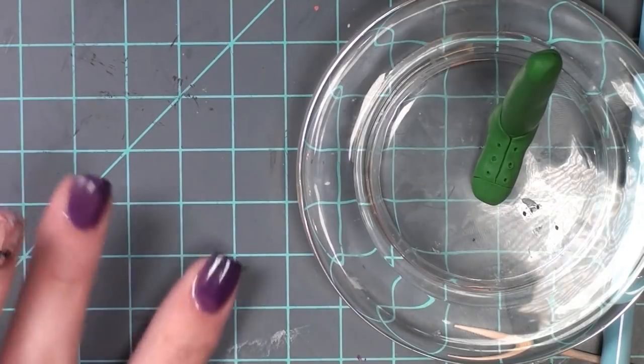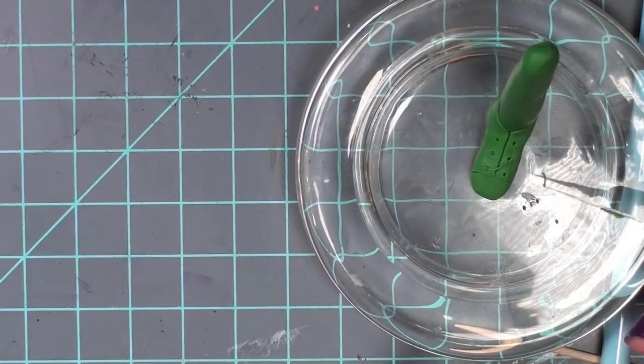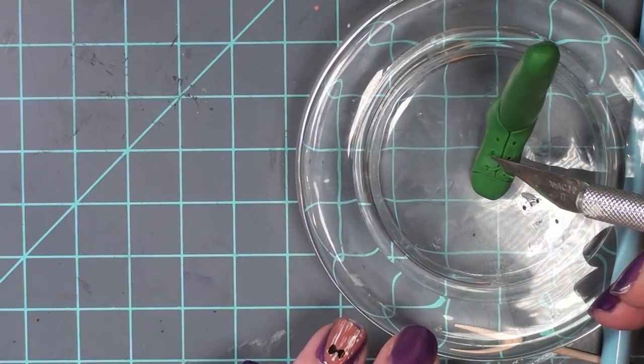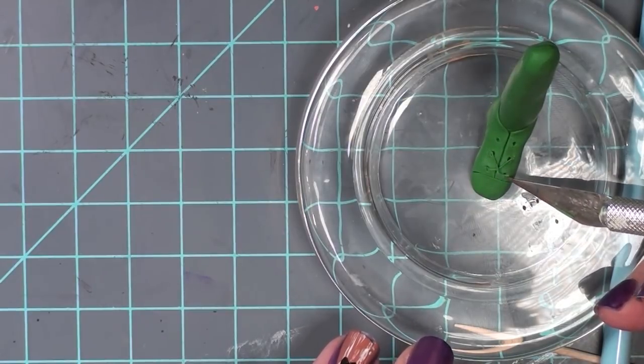Now I'm going to take some clay and make a very thinly rolled snake of clay. I'm going to use this to cross back and forth between the eyelets I made with the toothpick to create the illusion of shoestrings.